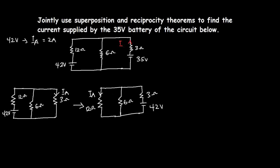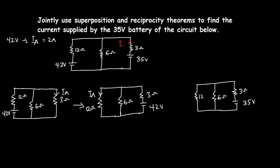Now we have to find the current IB when the 35-volt source is acting alone. With the 35-volt source acting alone, we have this circuit: the 35-volt source, 3 ohms, 6 ohms, and 12 ohms. We need to find the source current IC in this circuit. Instead of refinding the total resistance and using it to find IB directly, we are going to use a different method and compare the two circuits.